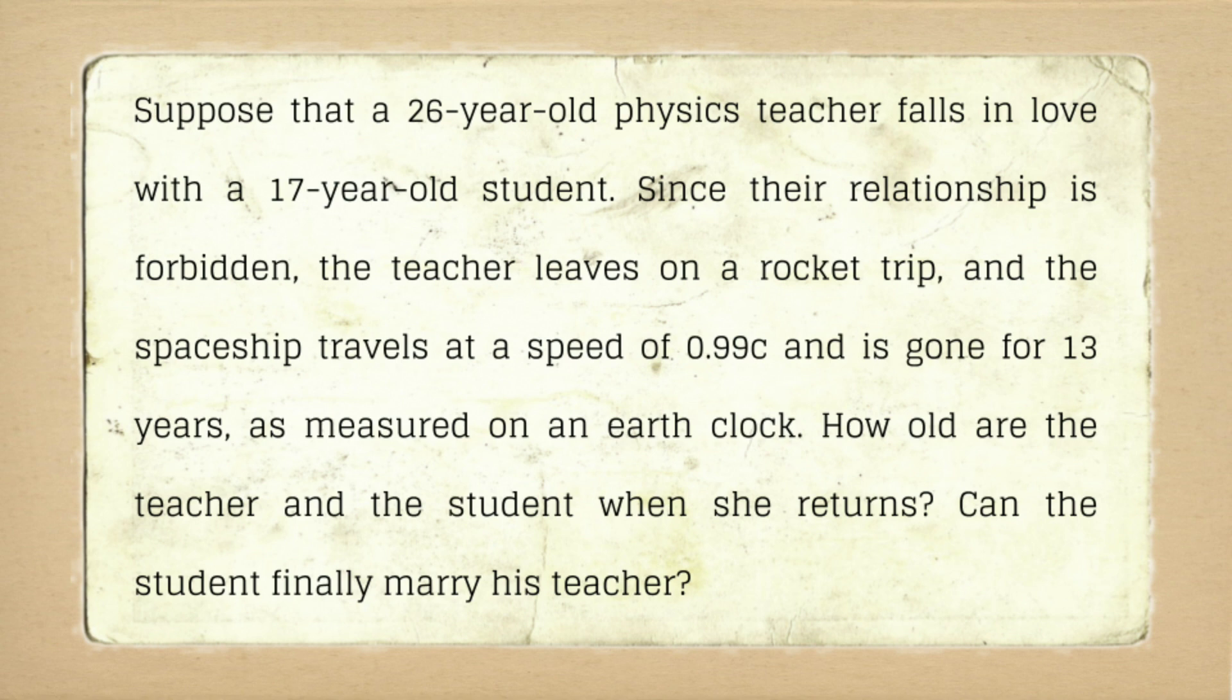Suppose that a 26-year-old physics teacher falls in love with a 17-year-old student. Since their relationship is forbidden, the teacher leaves on a rocket trip, and the spaceship travels at a speed of 0.99c and is gone for 13 years, as measured on an earth clock.